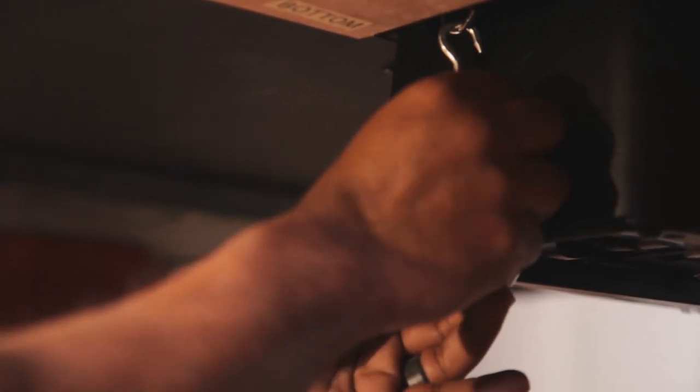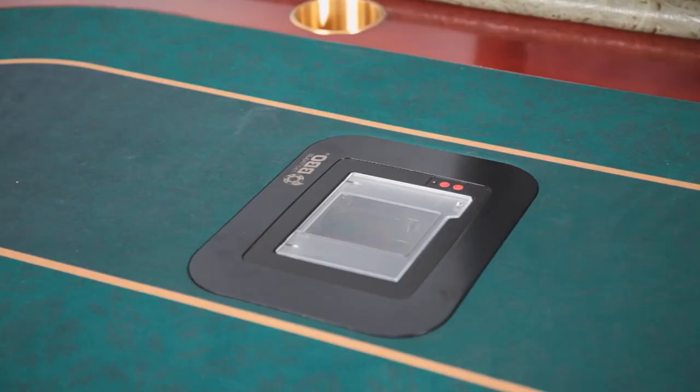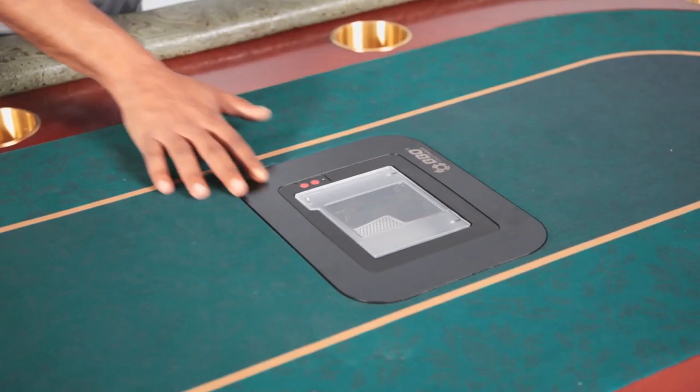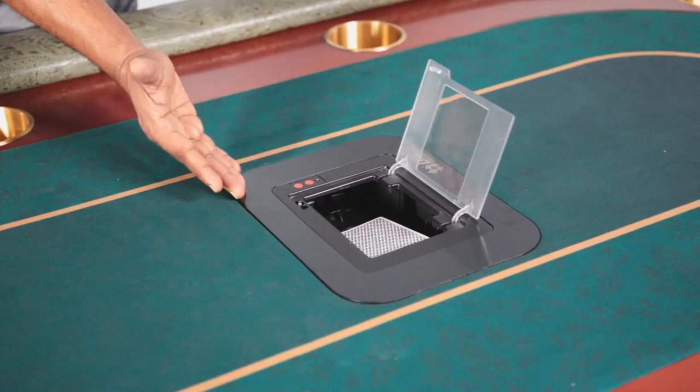You're going to want to be looking up on top of your table and adjusting the shuffler unit to make sure that it's sitting flush with the hole that's cut there. Once you've done that, you can tighten your screws to get it as tight as you need it to be to hold the shuffler in place.